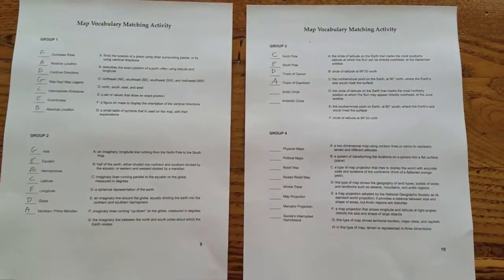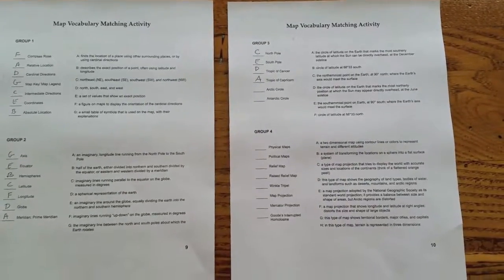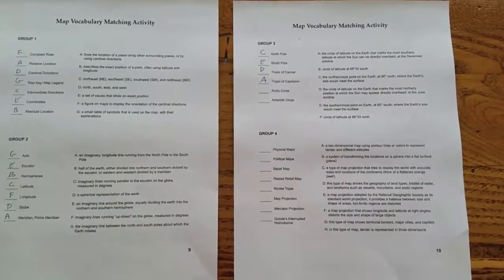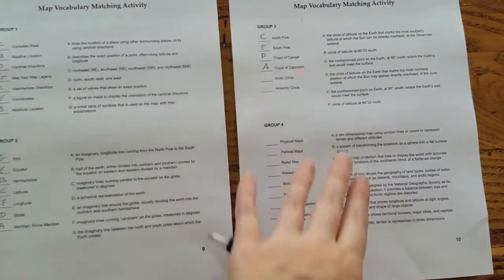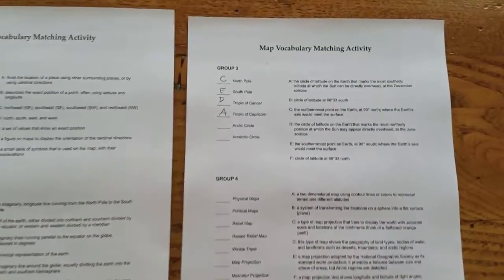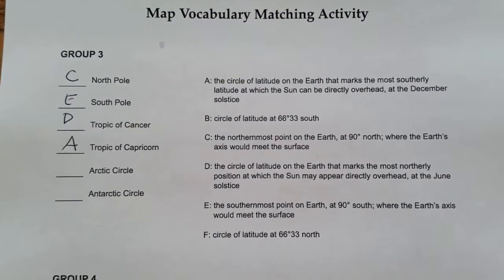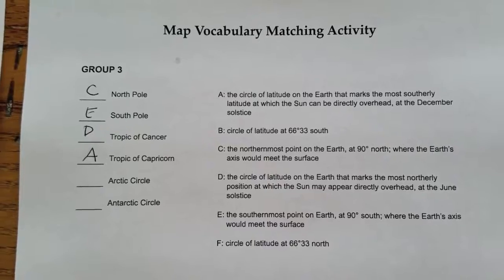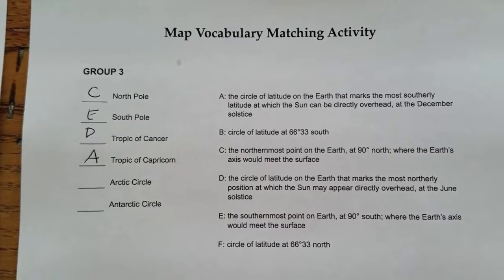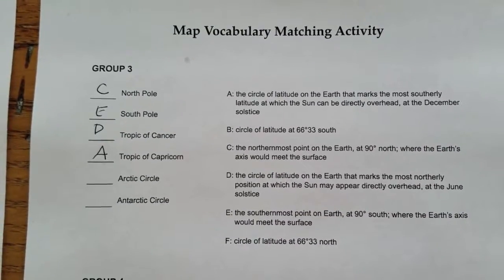The last activity can be used as an assessment or just as an activity in partners. Sometimes I cut it apart because it's really four separate sections. For example, this section here we're just talking about places on the map: the north and the south pole, the Tropic of Cancer and Capricorn, the Arctic Circle and the Antarctic Circle.